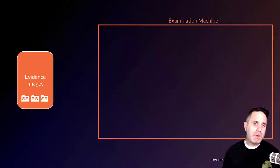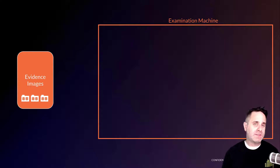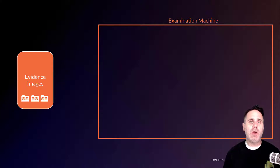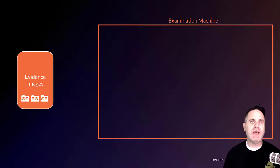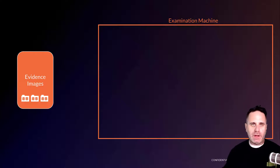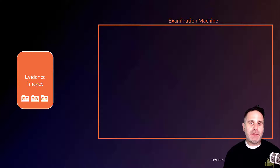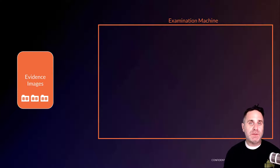What I would recommend is if you're buying a new system, a new box, get one that has hot swappable hard drive bays that can be accessed from outside the box. When you image, FTK Imager and other imaging programs will give you the option of segmenting your images. FTK also allows you to determine the size of those segments.